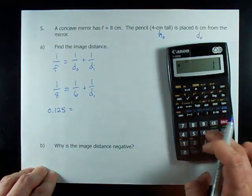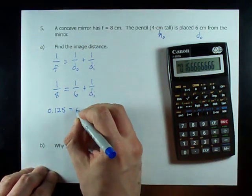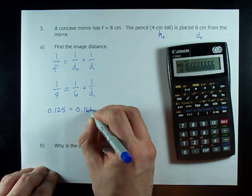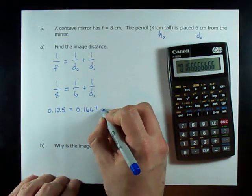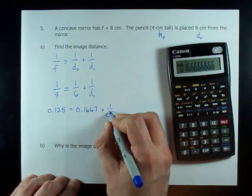1 divided by 6 gives me 0.166, and it keeps going. I'm going to round it to 7. Plus 1 over D_I.